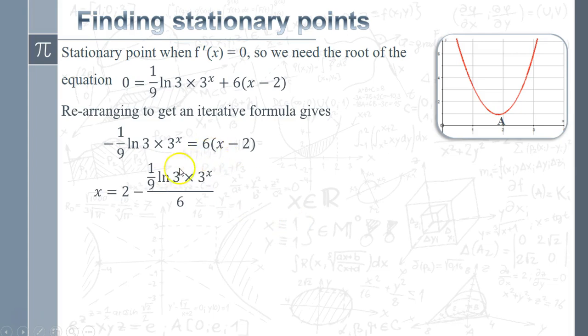Divide by 6 and then add the 2, and we end up with our iterative formula. That thing's a little bit messy, so I'm going to do a quick bit of tidying up, deal with the ninth, the sixth, and the constant, get it into a single fraction. It ends up looking like x = 2 - (1/54)·ln(3)·3^x, which equals (108 - ln(3)·3^x)/54.